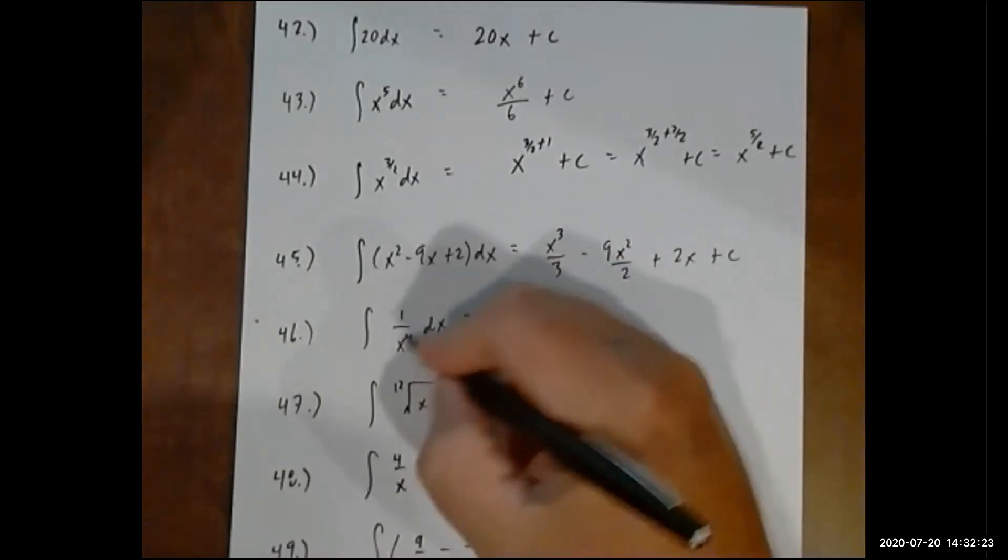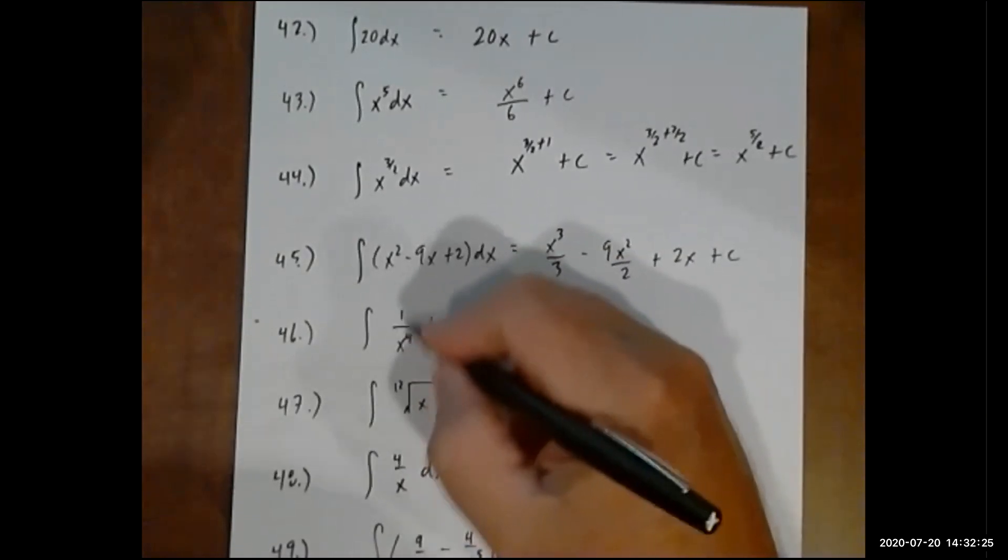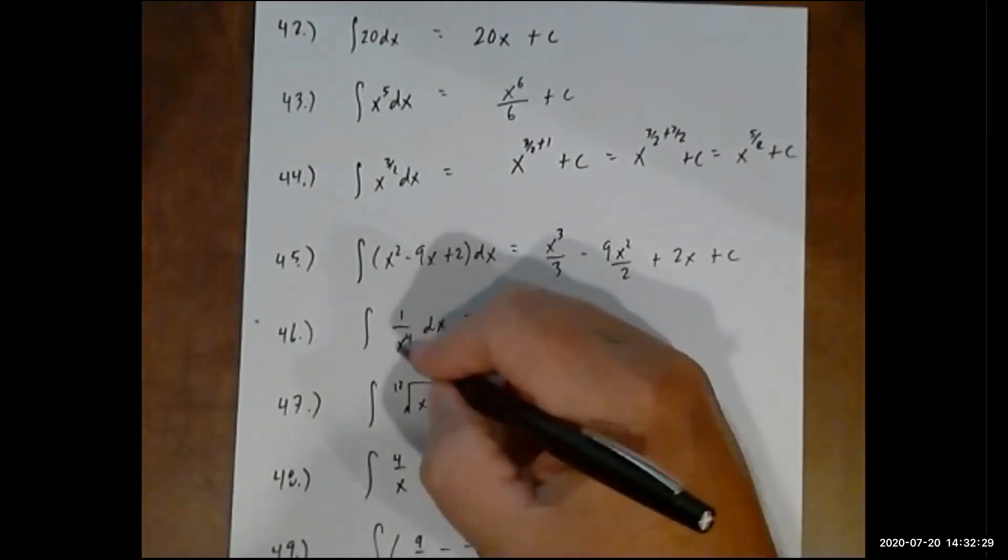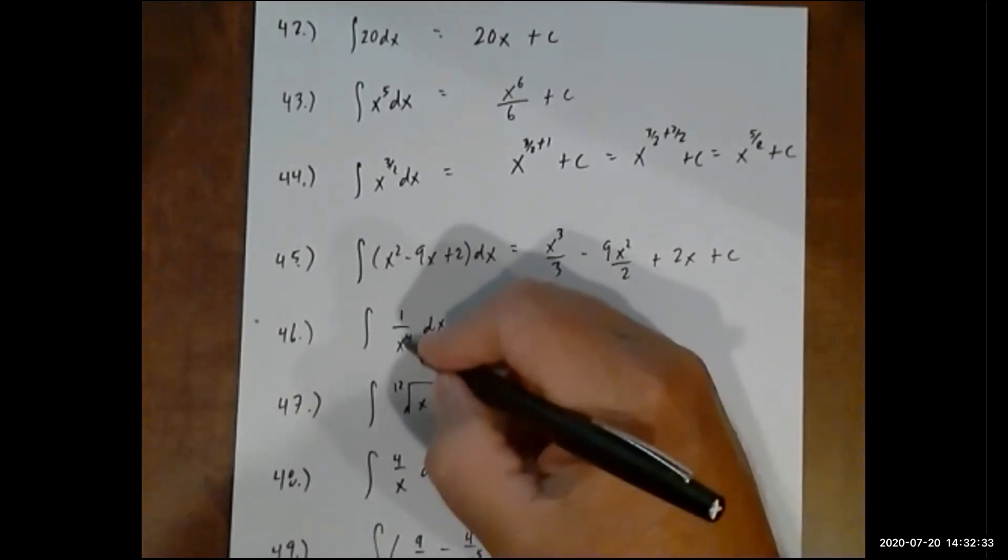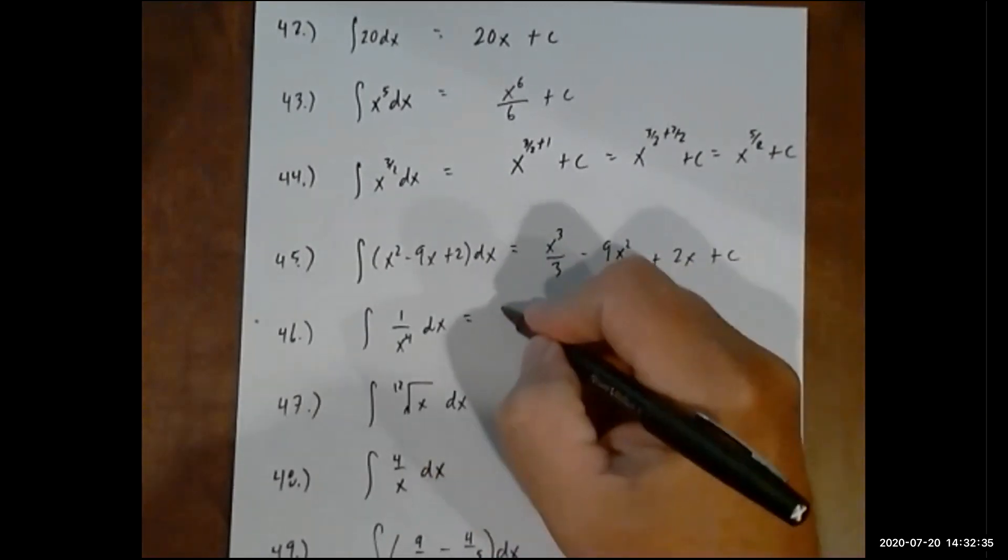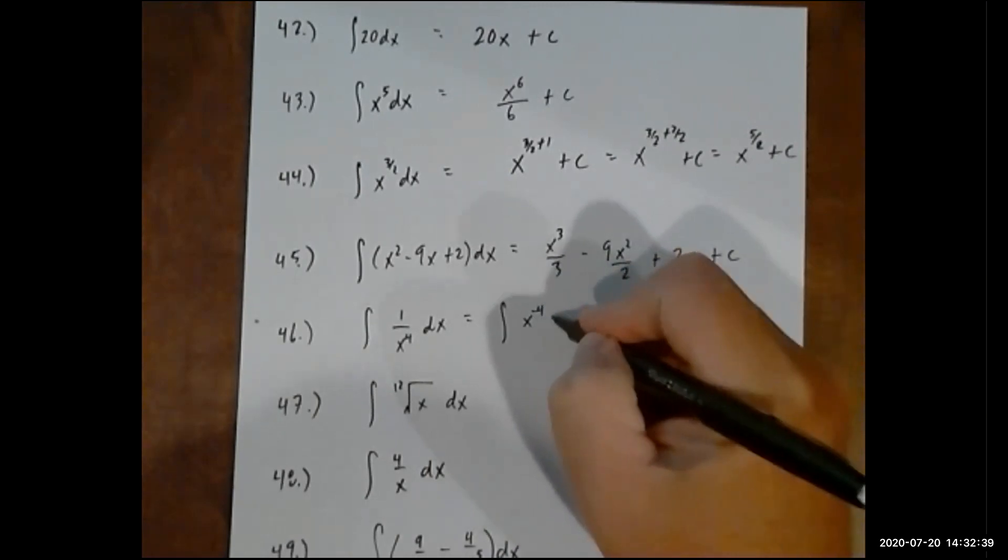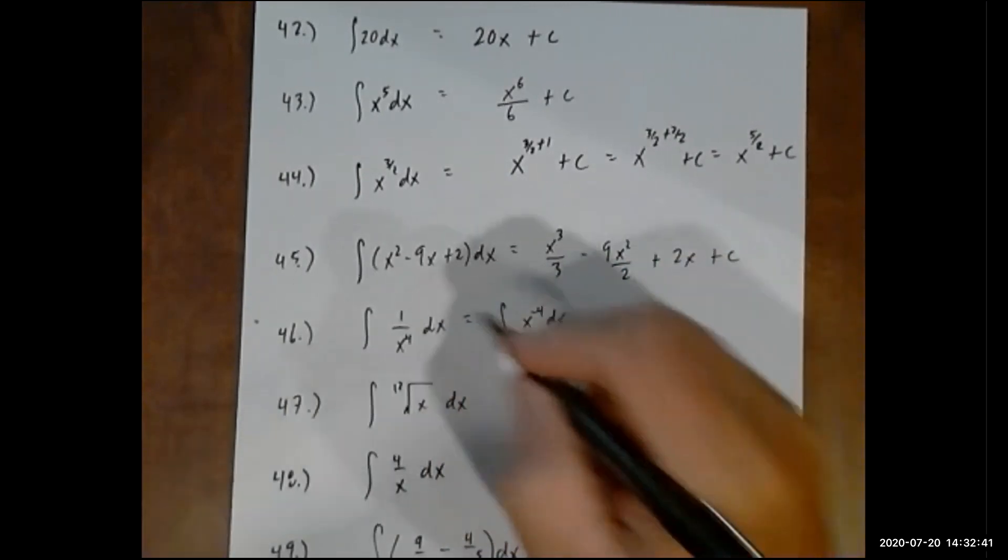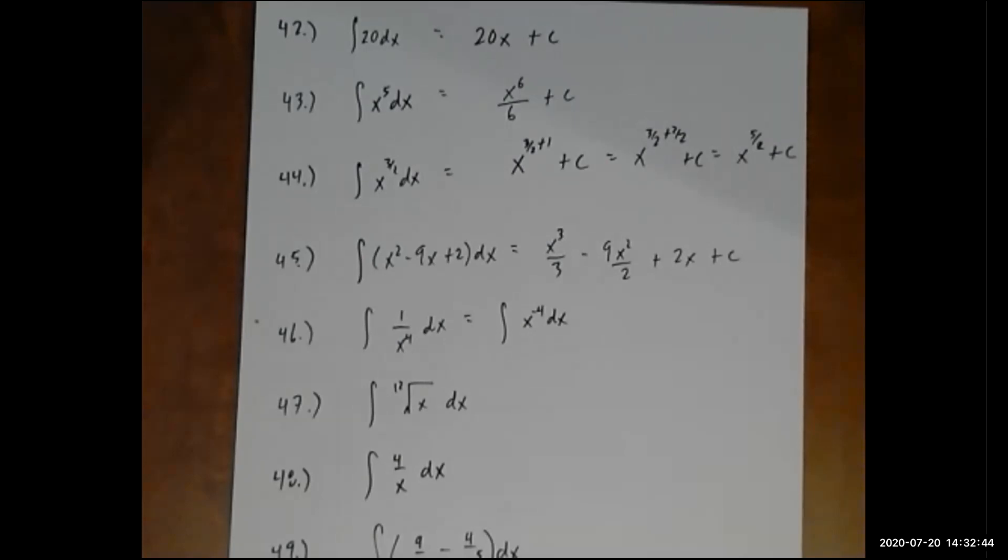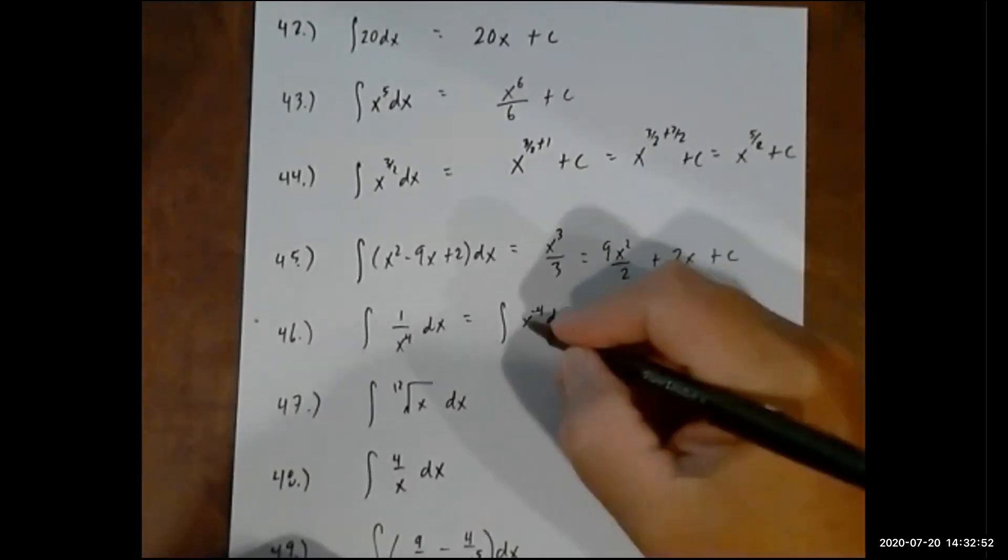Now here, because we want to apply the power rule, currently this problem is not written where we can apply the power rule because the exponent and the variable's in the bottom. So the first step is, let's rewrite this. And we can move the variable up to the top if we make the exponent negative.